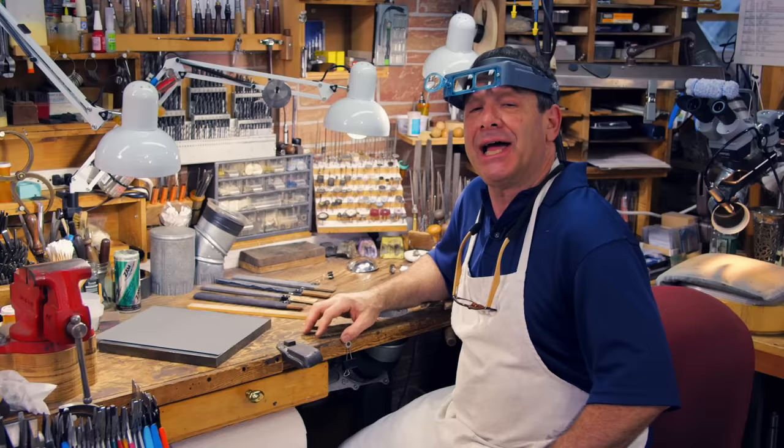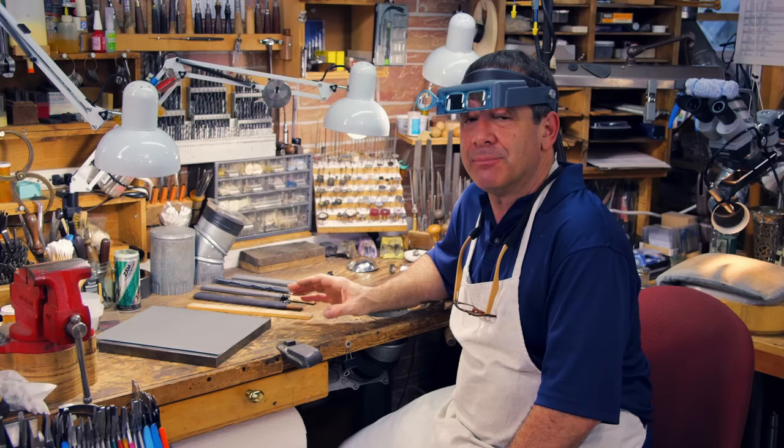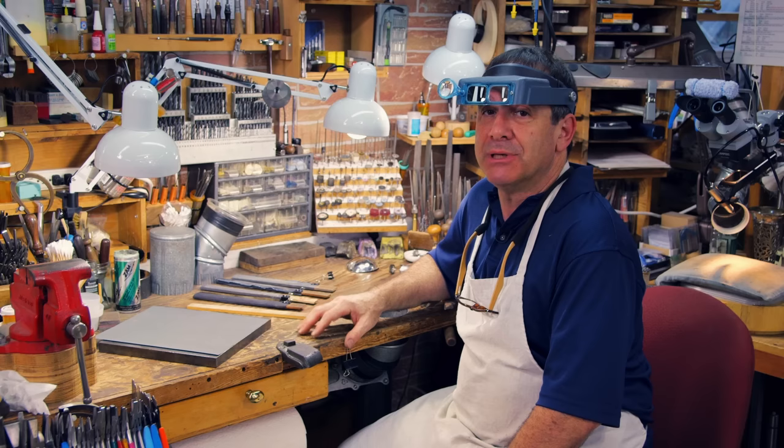Hi, I'm Jeff Herman and I'm going to demonstrate how to remove a scratch from a piece of sterling using various abrasive papers and ending up at the polishing machine to give the piece a very glossy finish in the end.